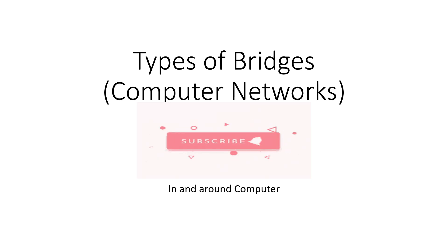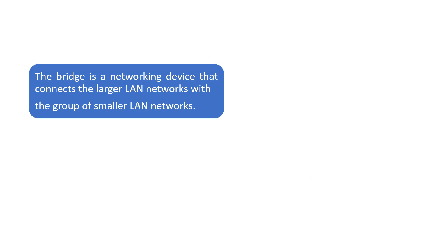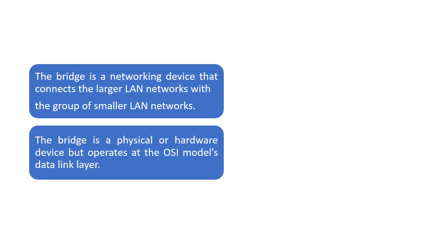In this video we are going to see the types of bridges in computer networks. First of all, we can see what is a bridge. It is a networking device that connects the larger LAN networks with a group of smaller LAN networks. It is a physical or hardware device but it operates at the OSI model's data link layer.